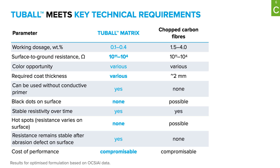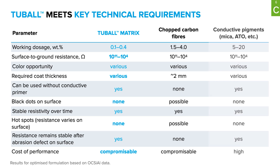Another common solution to make flooring compounds conductive is conductive mica, or similar alternatives like conductive ATO. Compared to chopped carbon fiber, conductive mica doesn't have all the mentioned technical problems. However, conductive mica requires higher working dosages, which leads to a higher cost-performance ratio. In contrast, with tubal nanotubes the working dosages are much lower and the cost performance can be much better. Reducing base coat thickness, for example when replacing chopped carbon fiber, can also provide additional cost savings.